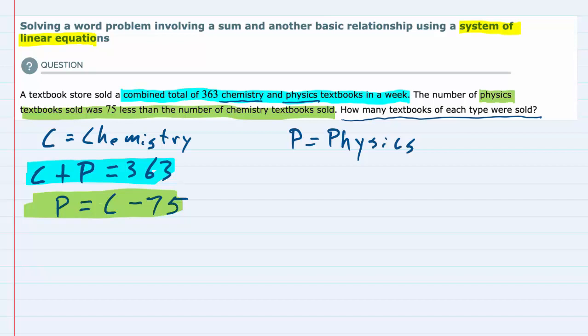Since we now have two equations, we can solve this. Since the second one is already solved for P, I'm going to do substitution and just replace the P in the top equation with that P value in the second equation. So rewriting the first equation, it's now going to be C plus C minus 75 equals 363. Replacing P with what we said P is equal to, we now have one equation and only one variable.